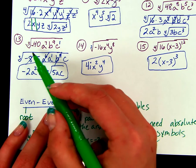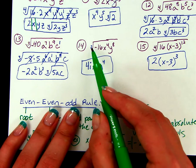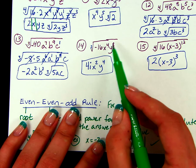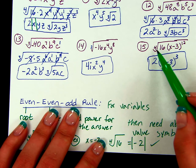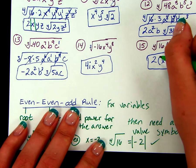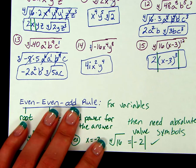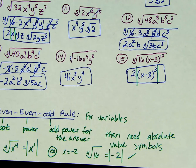And example 13 — odd root, don't need to worry about it. Next one: we have even, even, even and even, even, even — so the rule doesn't apply. And the next one: we have even, even, odd. So this group is actually going to go into the absolute value symbol, since we have an odd power for that answer.